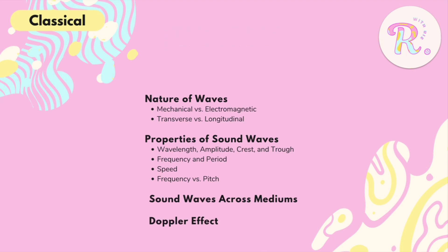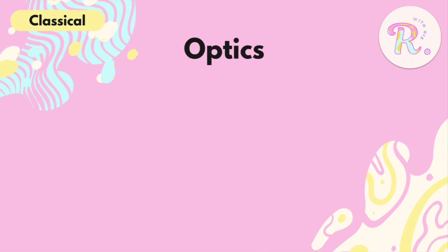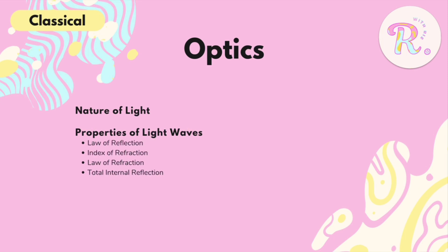We also have the Doppler effect. Moving on to optics — just your light and vision. We cover the nature of light and the properties of light waves, including reflection and refraction: the law of reflection, index of refraction, law of refraction, and total internal reflection. We also have dispersion and prisms. For mirrors and lenses, I've already covered this in a tutorial — just a cheat sheet of how to answer mirrors and lenses easily — but I'll most likely release a mini-lecture soon so you'd know from start to finish how to properly answer them the long way.